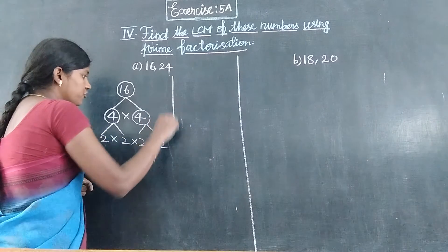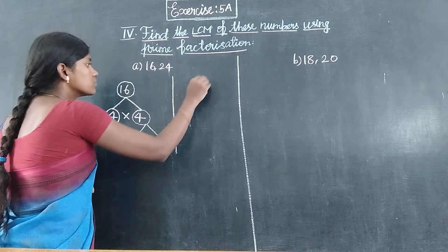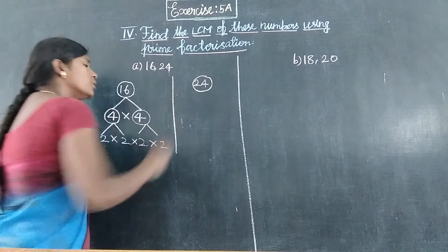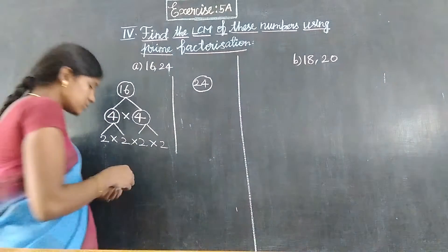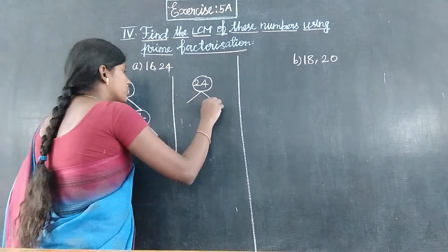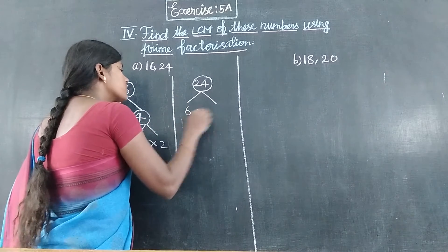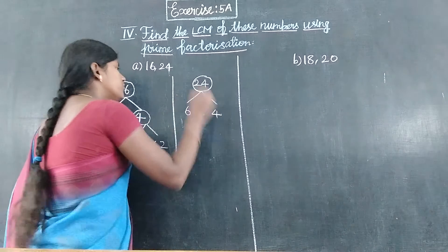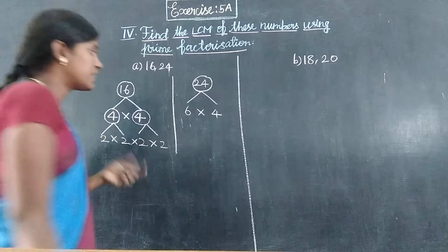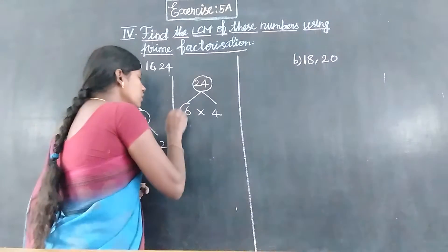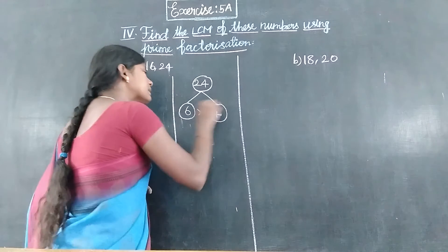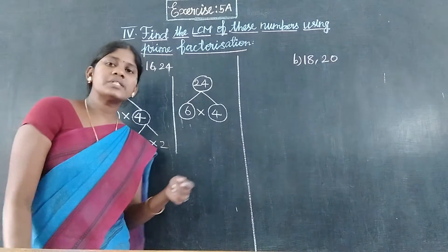Next, we factorize 24. Twenty-four will be broken down. Six fours are twenty-four, so 24 equals 6 times 4. Six and four are both composite numbers.